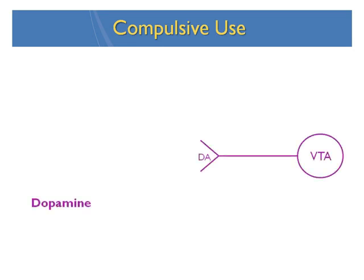This is the ventral tegmental area — a group of cells that make a chemical called dopamine. They send the dopamine down to another group of cells called the nucleus accumbens. When the dopamine hits the nucleus accumbens, that's when the magic happens. With enough dopamine at the nucleus accumbens, we have mental focus and motivation, we're able to feel pleasure and reward, and we have hedonic tone — which means we can enjoy life. When there's enough dopamine, there's enough of everything. And when there isn't enough dopamine, there isn't enough of everything, and everyone gets pretty irritable.